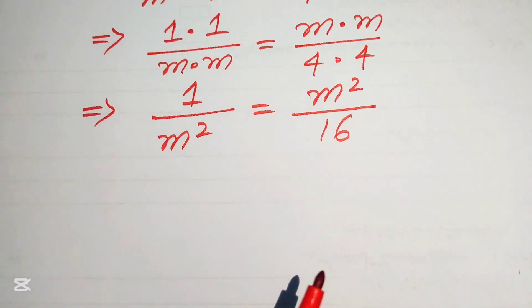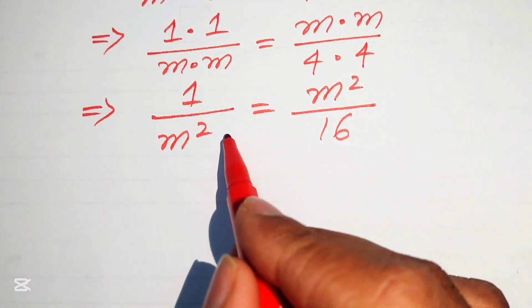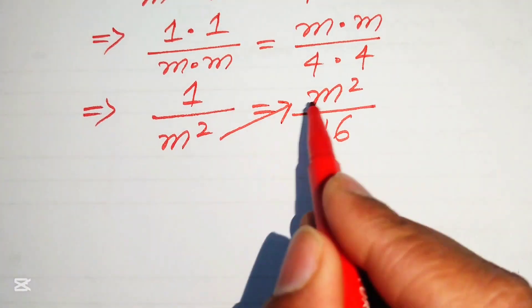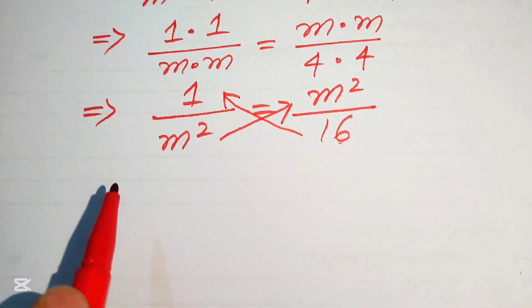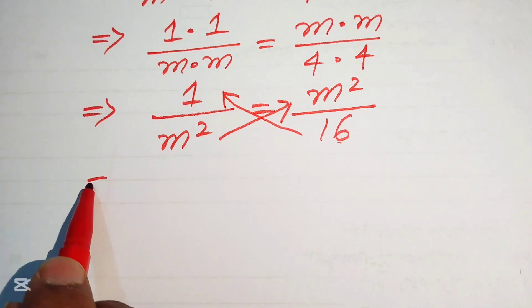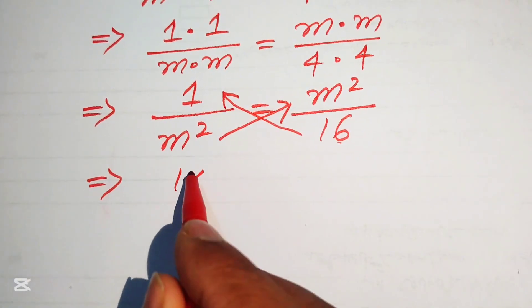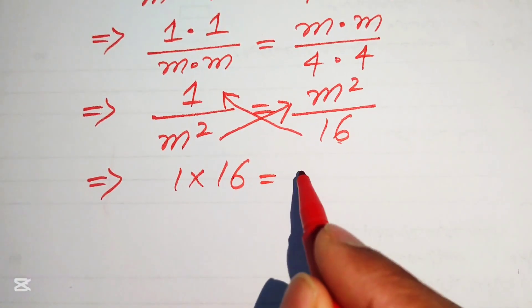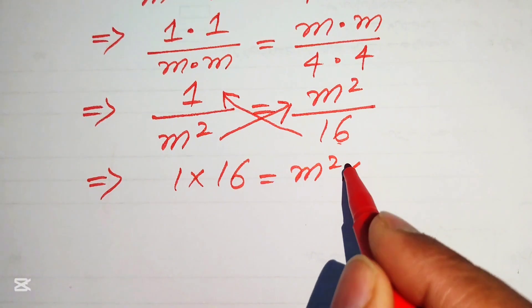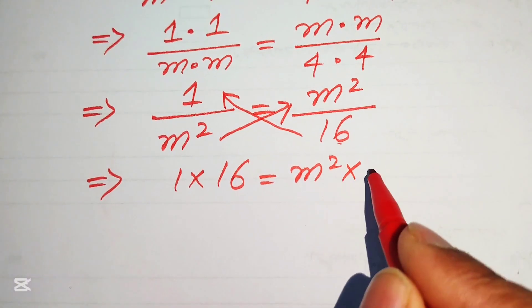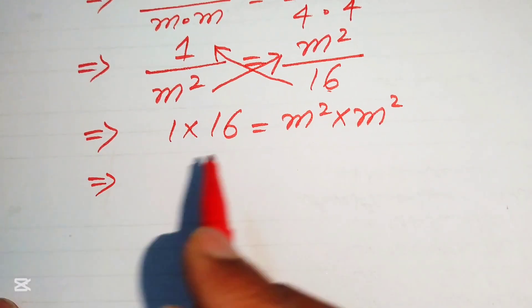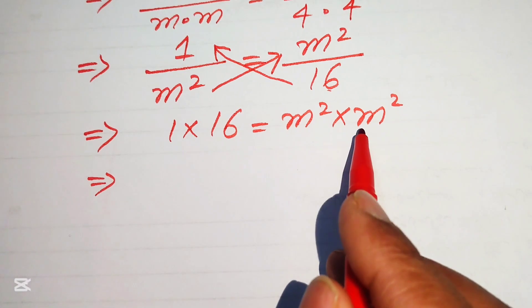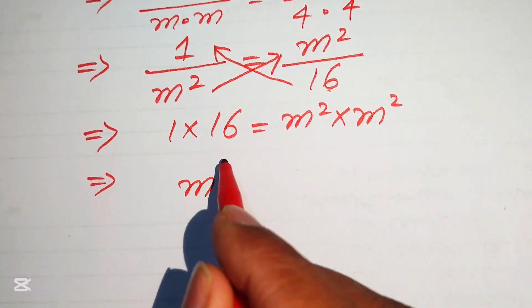Now we need to cross multiply. We multiply m² with m² and 16 with 1, so it is written as 1 × 16 = m² × m², which gives us 16 = m² × m².